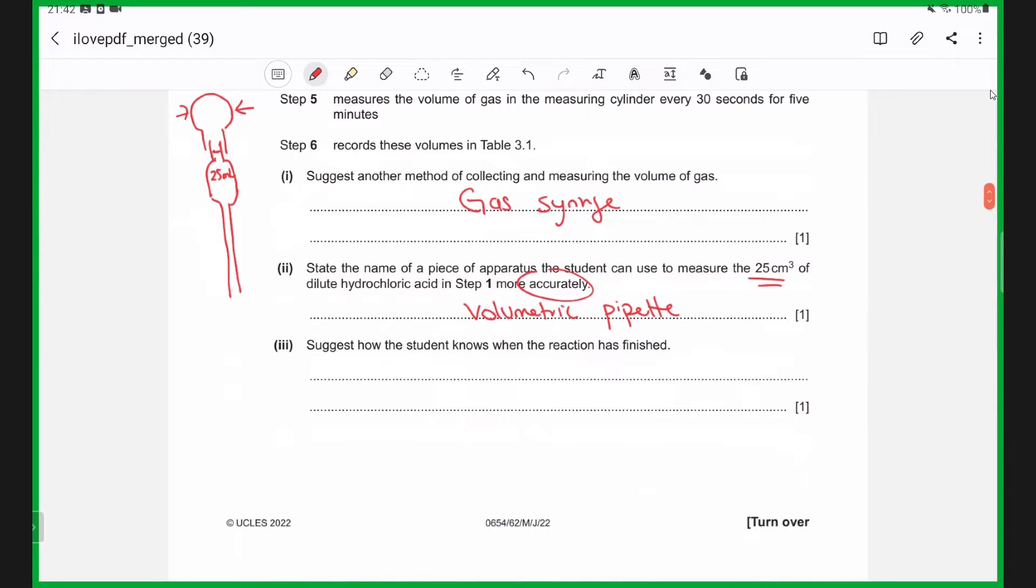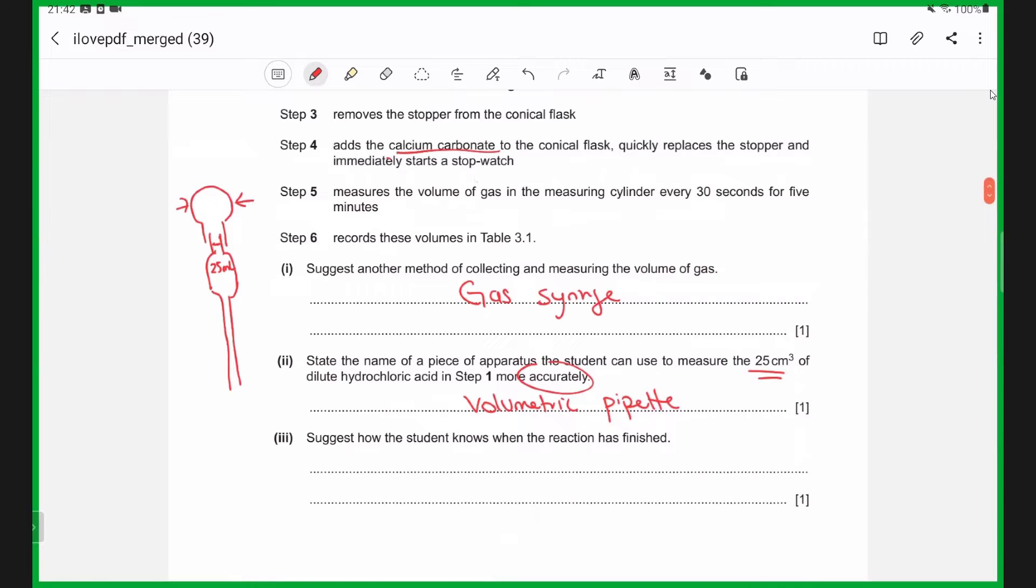Suggest how the student knows when the reaction is finished. Well, in this reaction, you notice that there is a gas being produced, right? So when the fizzing stops, we know that the reaction has stopped because carbon dioxide gas is no longer being produced. When the fizzing stops, the reaction is finished.